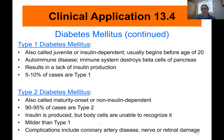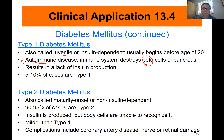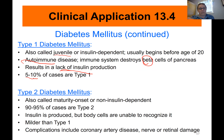There are two types of diabetes mellitus. Type 1, also called juvenile or insulin-dependent diabetes, is usually diagnosed before adulthood. It is an autoimmune disease where the immune system destroys beta cells of the pancreas, resulting in a lack of insulin production. Patients with type 1 diabetes must take supplemental insulin via pump or injection. Type 1 accounts for about five to ten percent of diabetes mellitus cases.